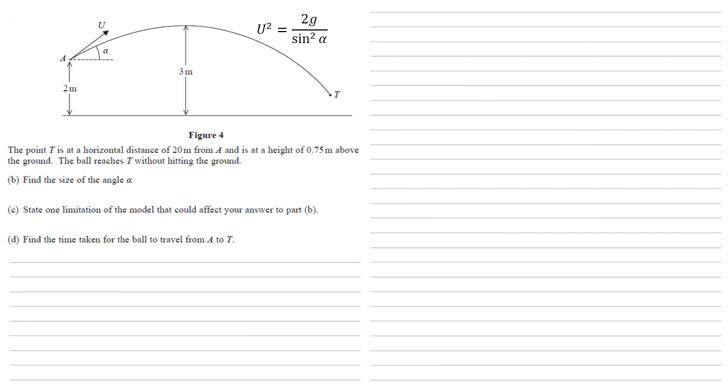Part C, we need to state one limitation of the model that could affect your answer to part B. I've gone with there will be air resistance. That's usually the classic answer for something like this, but there are others. So for example, any spin on the ball would affect the answer. You could look at the fact that we've modelled the target as a point, whereas in real life, the target will have some size and whether the ball hits the target at the top or the bottom will affect the results. They're all valid. But as I say, I've gone with the air resistance answer.